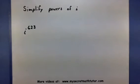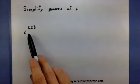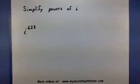In this video, I want to show you how to simplify high powers of i. So i is our imaginary number, and it's equal to the square root of negative 1. And here, in my problem, I have i to the 623. So that definitely needs to be simplified.